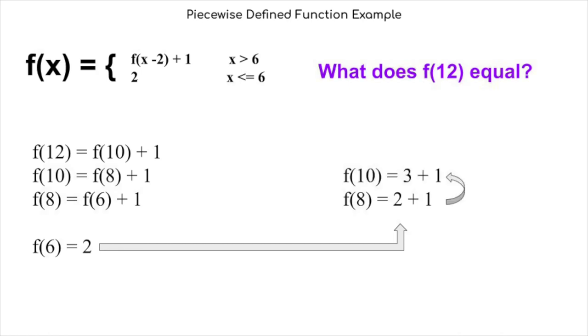Now that we know that f of eight equals three, we can put it into the next equation. And we can see that f of ten equals three plus one, which is four. Now we can plug that into the next equation and get that f of twelve equals four plus one. Now we know that f of twelve equals five.